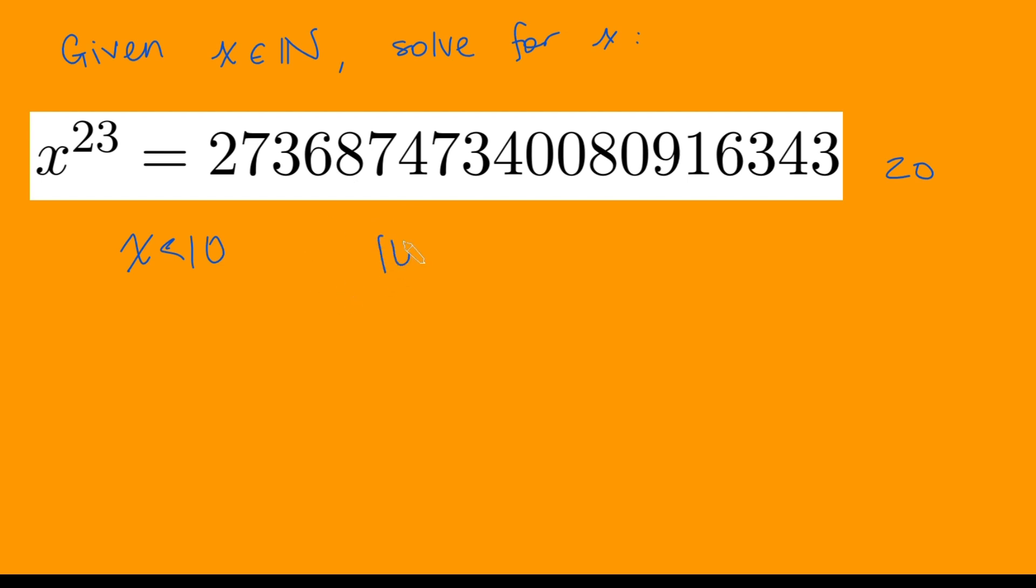Why is that? Well, 10 to the power of 23 is just 1 followed by a bunch of zeros. How many zeros? Well, there's going to be 23 of them. And so this will be 24 digits altogether, and this number here is clearly less than that, so x must be less than 10.